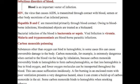Carbon monoxide poisoning is another infectious disorder of the blood. Substances other than oxygen can bind to hemoglobin, and in some cases this can cause irreversible damage. Carbon monoxide is extremely dangerous when carried to the blood via the lungs by inhalation, because it irreversibly binds to hemoglobin to form carboxyhemoglobin. This means less hemoglobin is free to bind oxygen, so fewer oxygen molecules can be transported throughout the blood, which can cause suffocation insidiously. A fire burning in an enclosed room with poor ventilation presents a very dangerous hazard since it can create a buildup of carbon monoxide in the air.